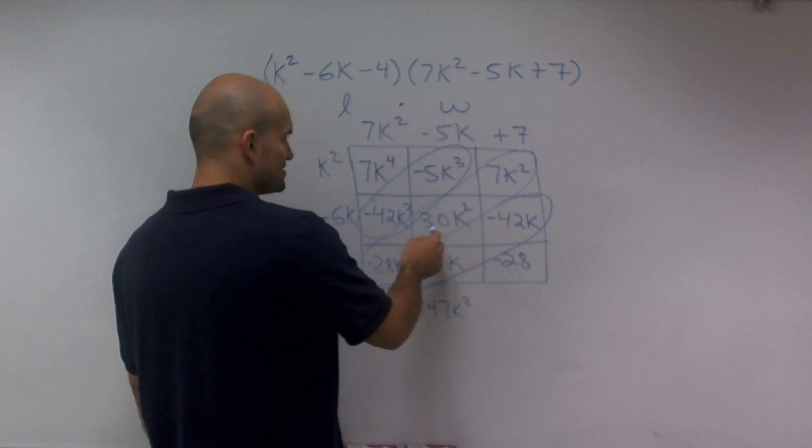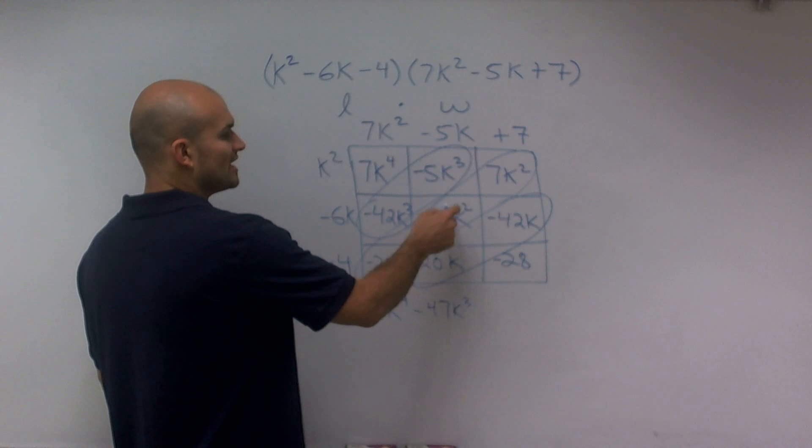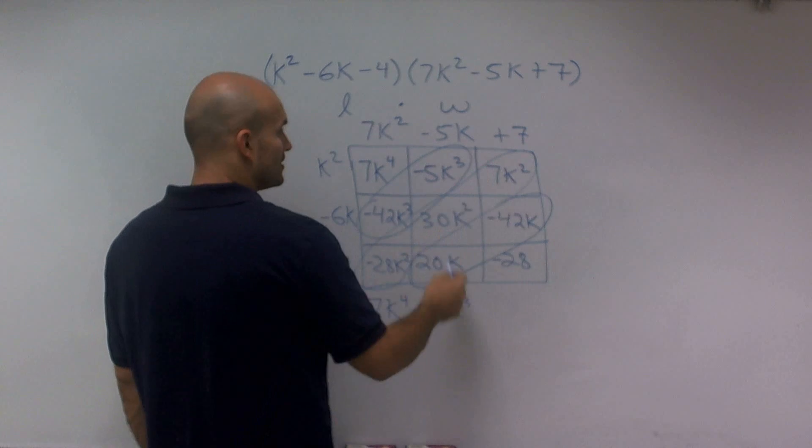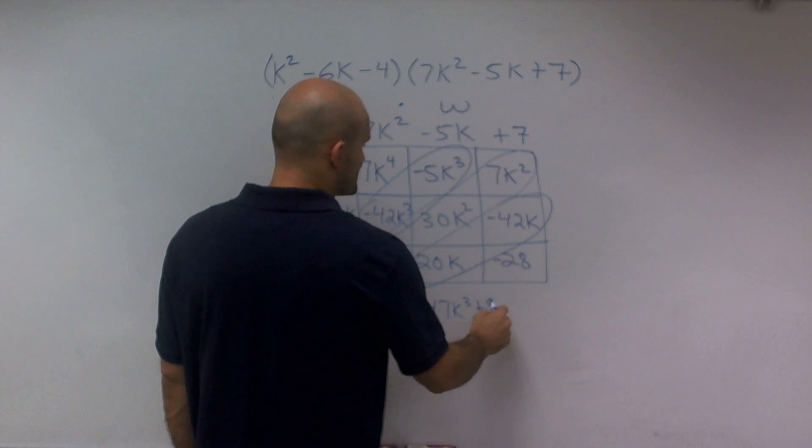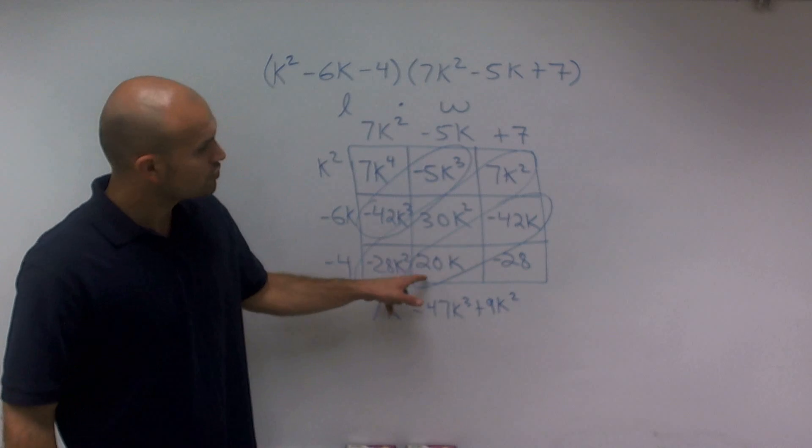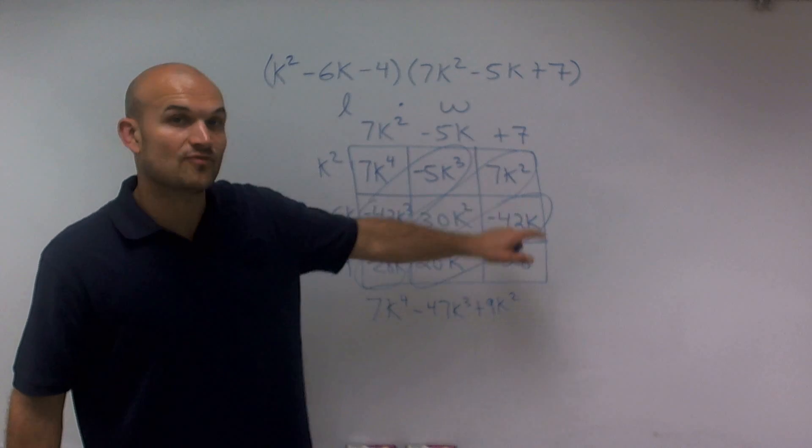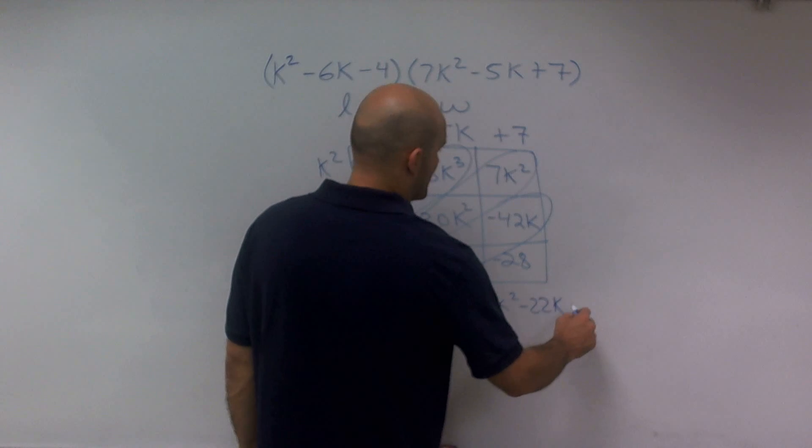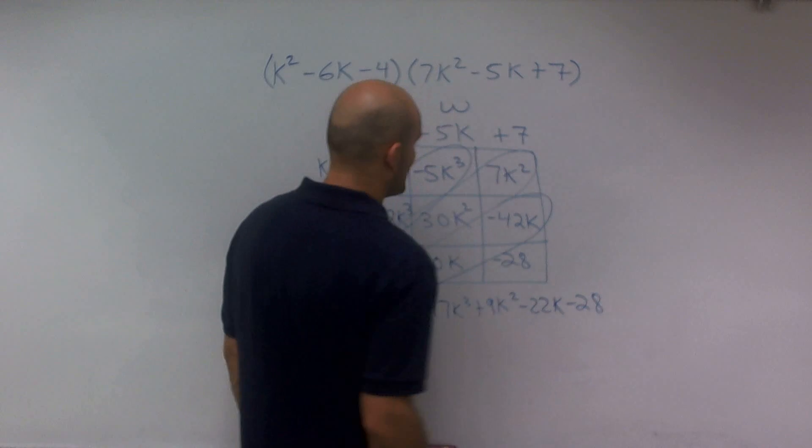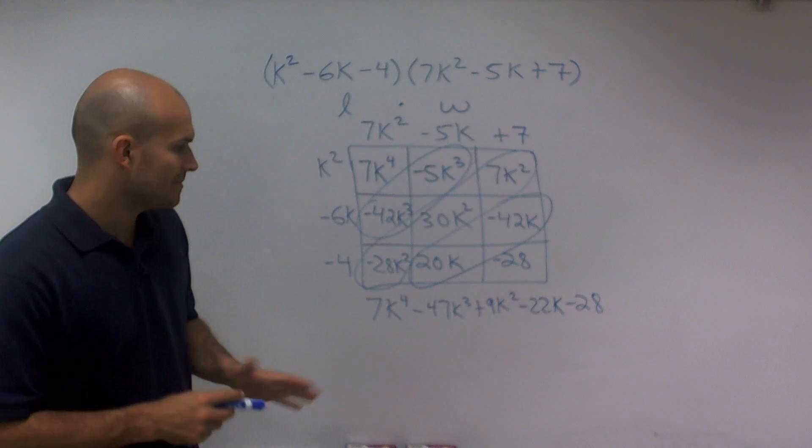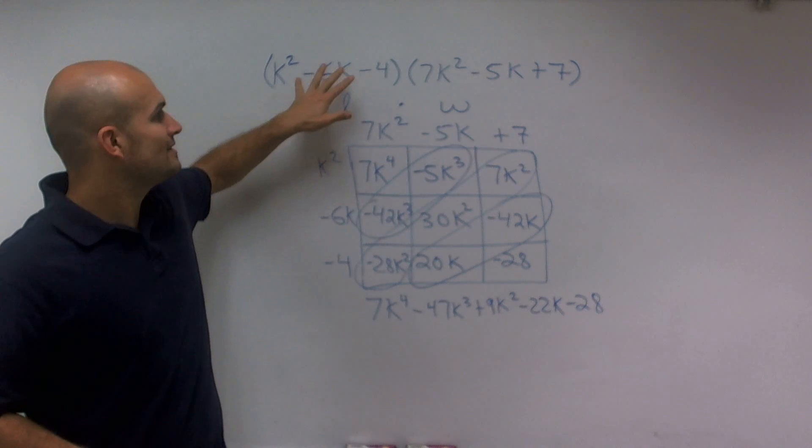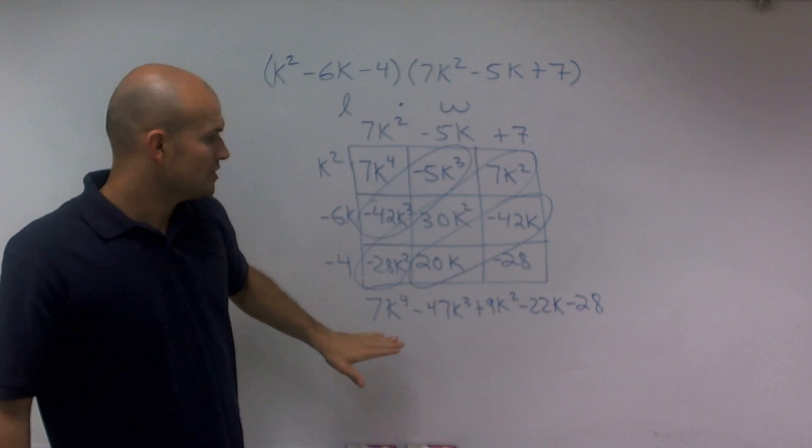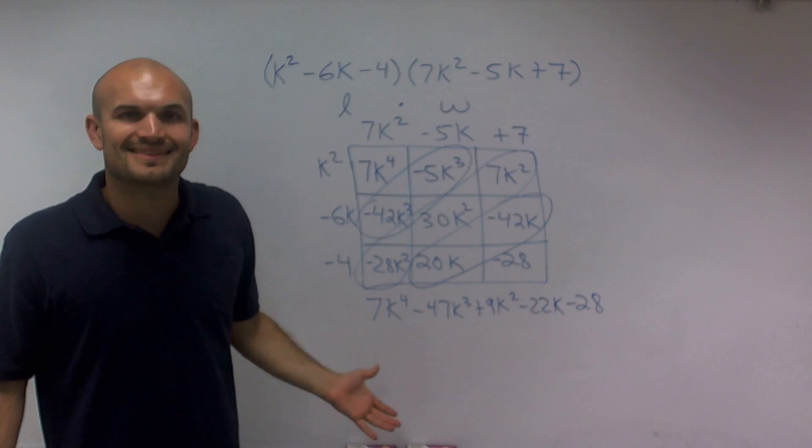So therefore that gives me negative 28k squared plus 30k squared is 2k squared, plus another 7k squared is going to be positive 9k squared. 20k minus 42k is negative 22k, and then minus 28. And there you go, ladies and gentlemen. Now I've just multiplied the trinomial times trinomial to produce this product. Thanks.